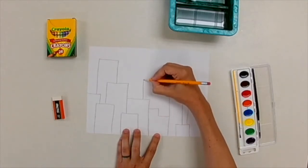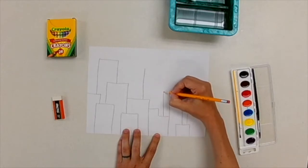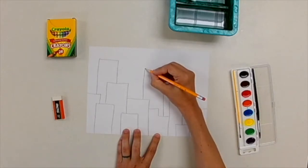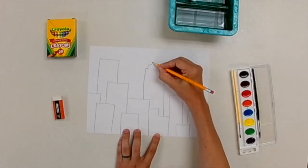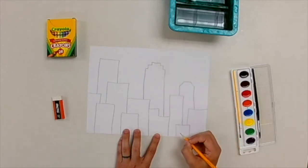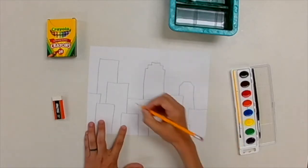My last building is going to have a staircase on the top. So it's going to go over, up, over, up, over. Kind of like a staircase. Just up, over, up, over. You want to make sure you're doing the same on both sides. And then I've got all of my buildings drawn out.